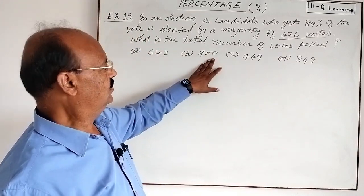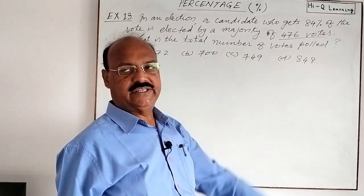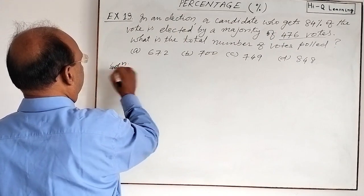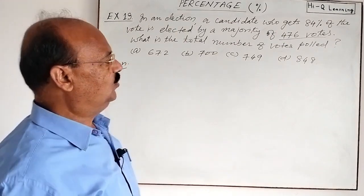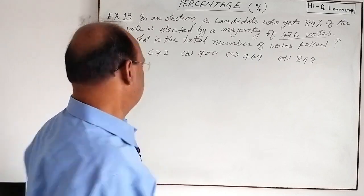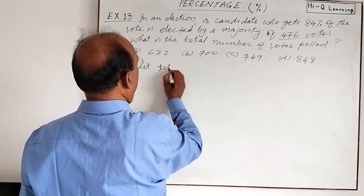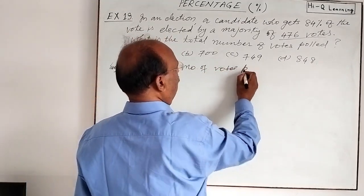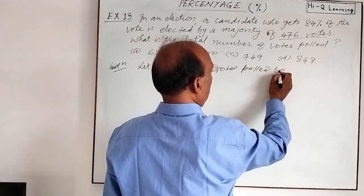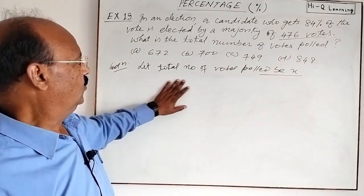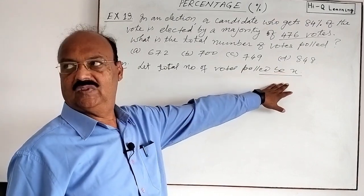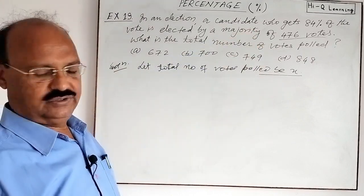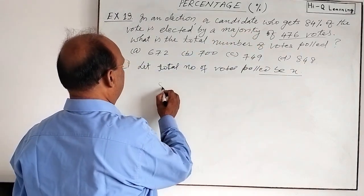Four options are given: 672, 700, 749, and 848. We have to select the correct option. Let us suppose the total number of votes polled be X. So here we have supposed the total number of votes polled is X.